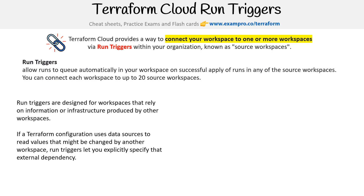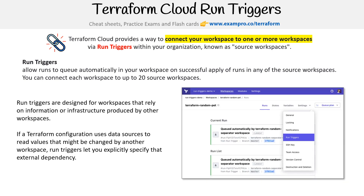If a Terraform configuration uses data sources to read values that might be changed by another workspace, run triggers let you explicitly specify the external dependencies. The idea is to allow you to say: I have one workspace, and I've triggered it to handle that dependency. This is really great if you have a bunch of environments or stacks that are reliant on each other and you want to have a kind of chain reaction.